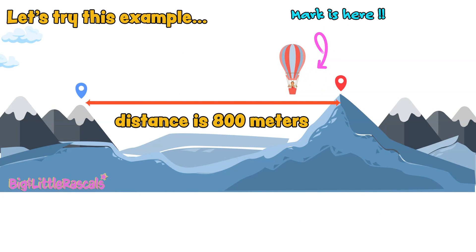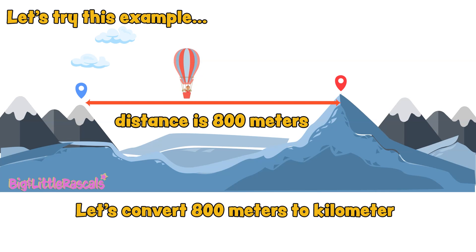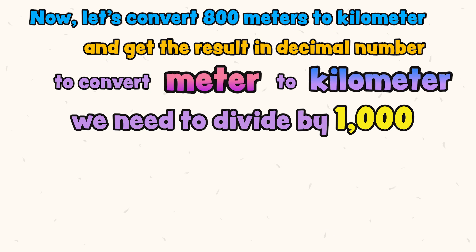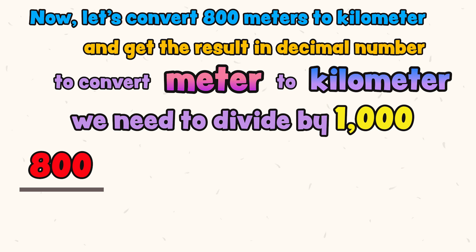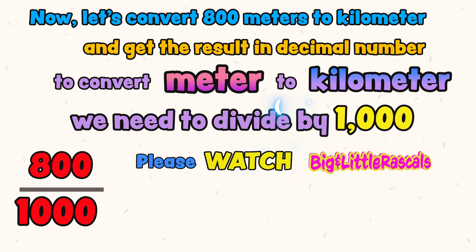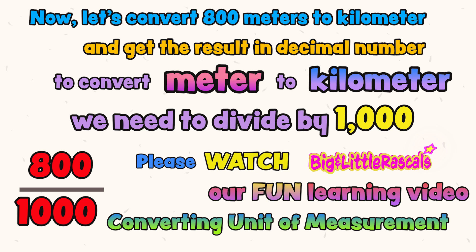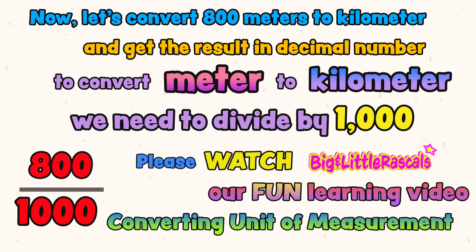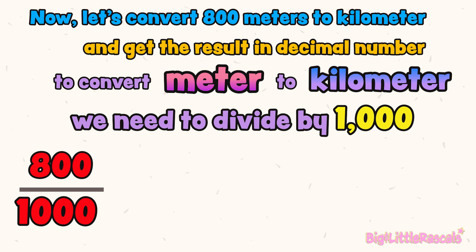Good job! Now let's try this example. Mark is flying with his air balloon from one point of a mountain to another mountain. The distance between the two mountains is 800 meters. Let's convert 800 meters to kilometers and get the result as a decimal number. To convert 800 meters to kilometers, we need to divide 800 by 1,000. To simplify, we first strike out all the same zeros from the top and bottom numbers, and it leaves us with 8 out of 10.